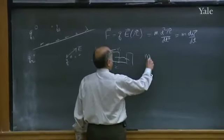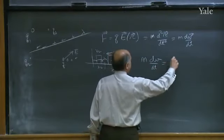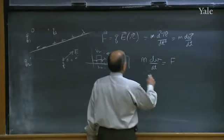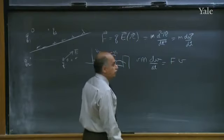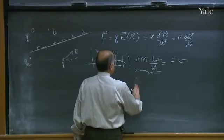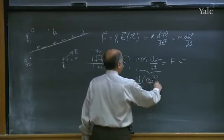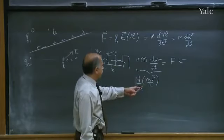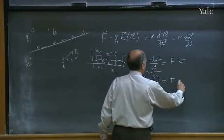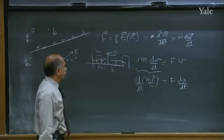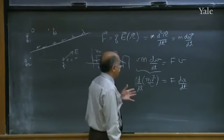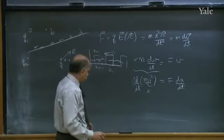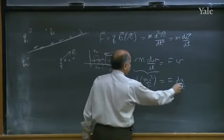You go to Newton's laws and we write m dv/dt is equal to f. It's all in one dimension now - I'm moving just along the line. Then I multiply both sides by v. On the left-hand side, if you know basic calculus, this is really d/dt of mv²/2 by the chain rule. The d/dt derivative is the v derivative followed by the derivative of v with respect to t. The v derivative will give you mv and then there is that. This becomes f·dx/dt.